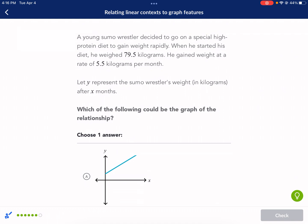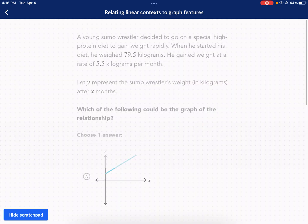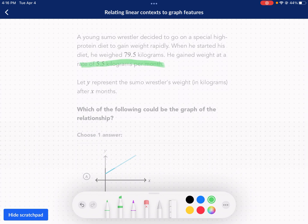A young sumo wrestler decided to go on a special high protein diet. When he started his diet, he weighed 79.5 kilos. He gained weight at a rate. Ah, there we go. Anytime it says rate, that's a dead giveaway. That means this is the slope. So we got the slope immediately. When he started his diet, this is, again, this is your start and that is your Y-intercept. So this time we're given Y-intercept and slope. Oh, we don't need to know that. So let's represent the sumo wrestler's weight after X months. So this is a gain diet.